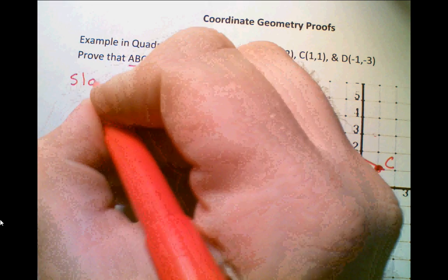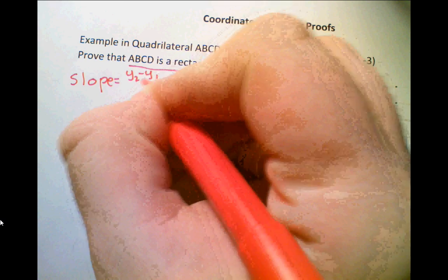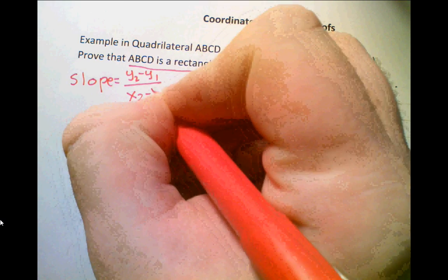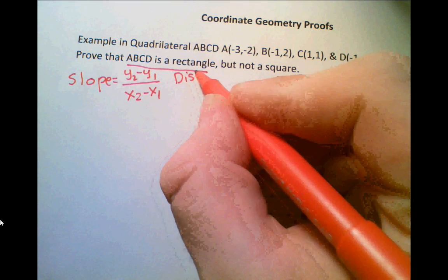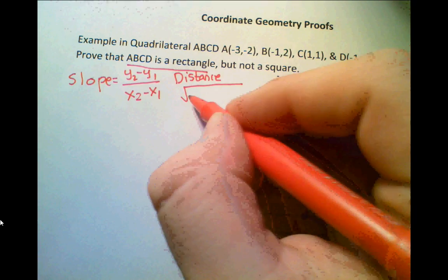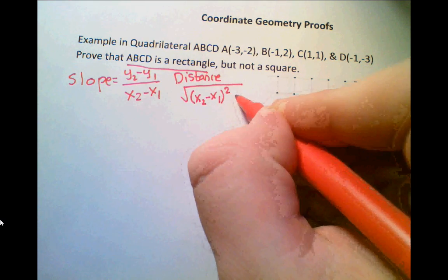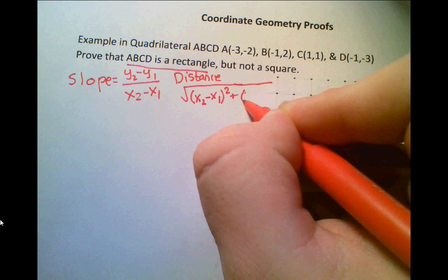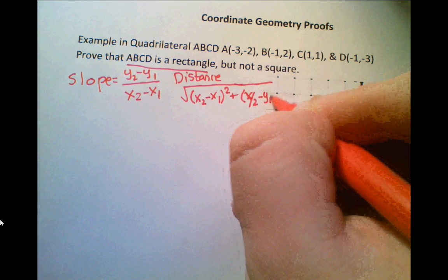If we remember, slope is equal to y2 minus y1 over x2 minus x1. And distance is the square root of x2 minus x1 squared plus y2 minus y1 squared.